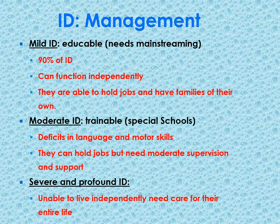The second category is moderate intellectual disability. These children are trainable in special schools and have deficits in language and motor skills. They can hold manual jobs but need moderate supervision and support. Severe and profound intellectual disability means the child is unable to live independently and requires continuous care, because they cannot perceive simple dangers like fire or traffic accidents, and must be under complete continuous supervision.